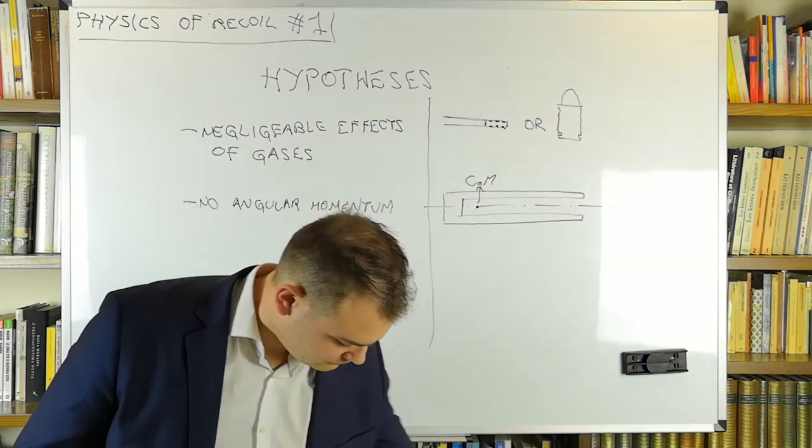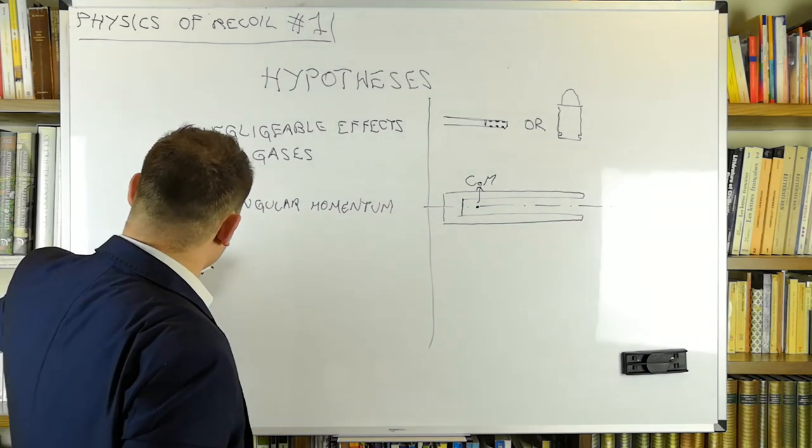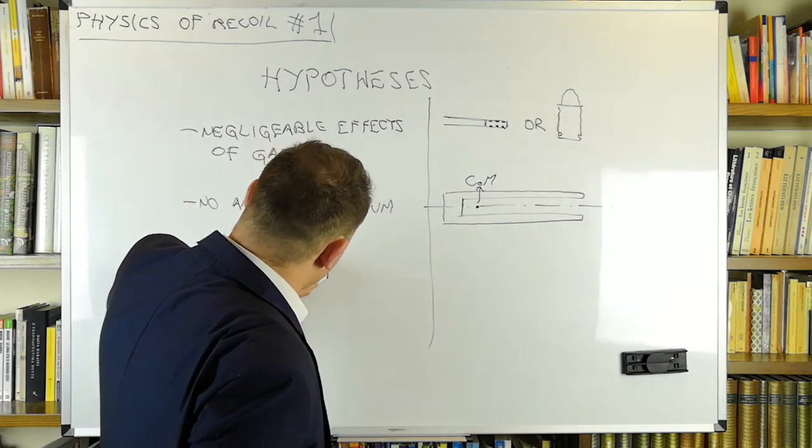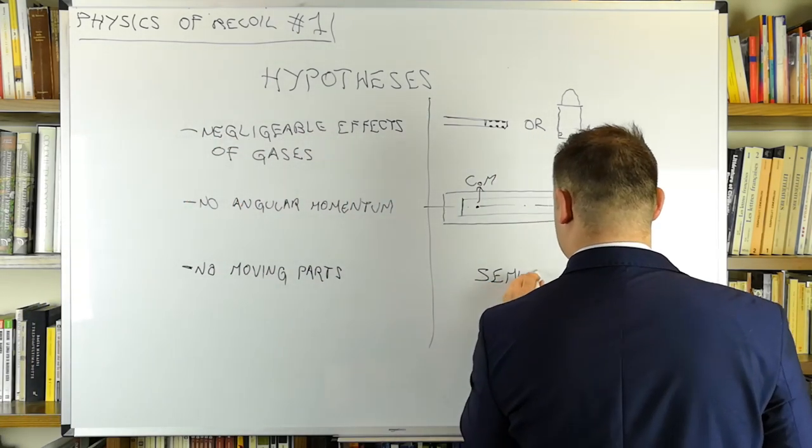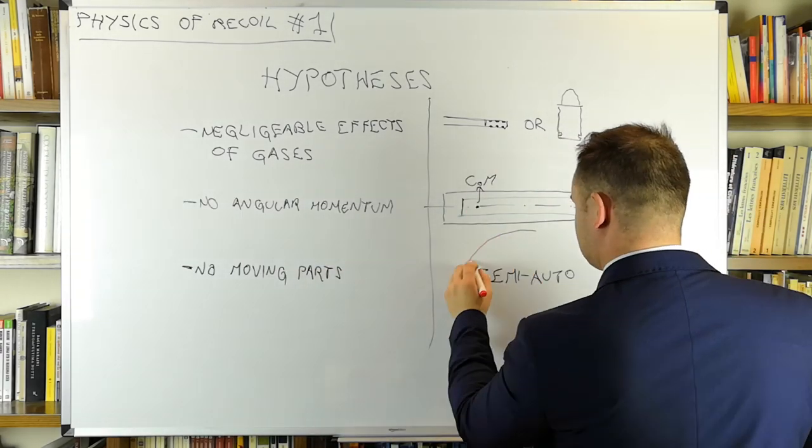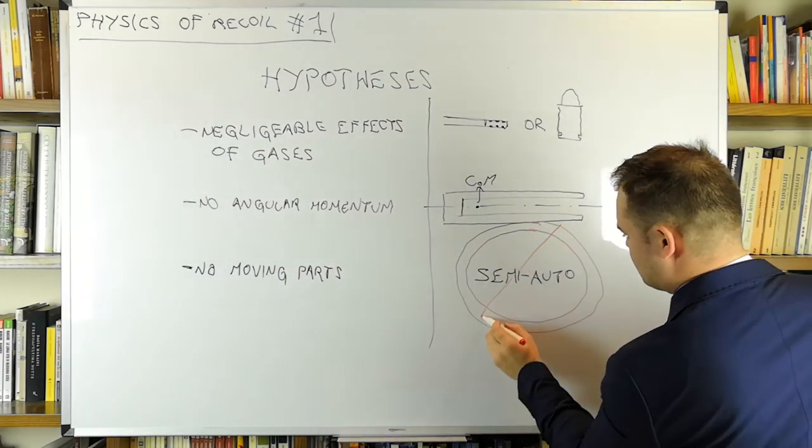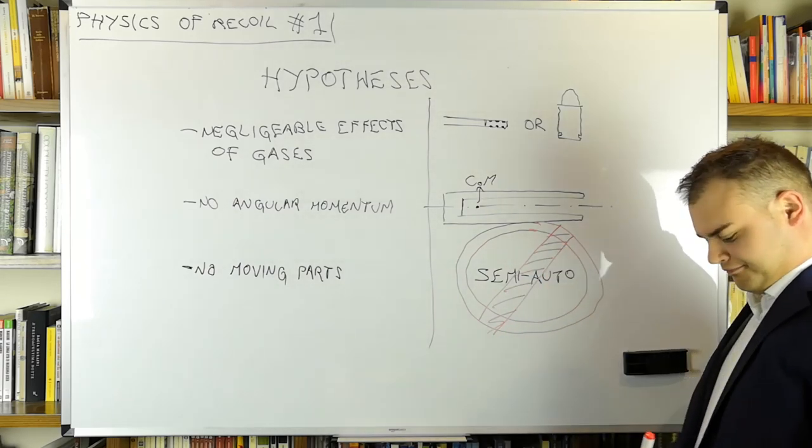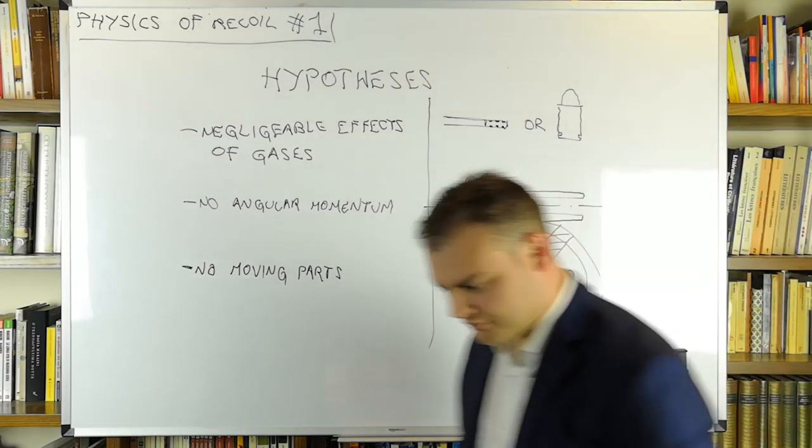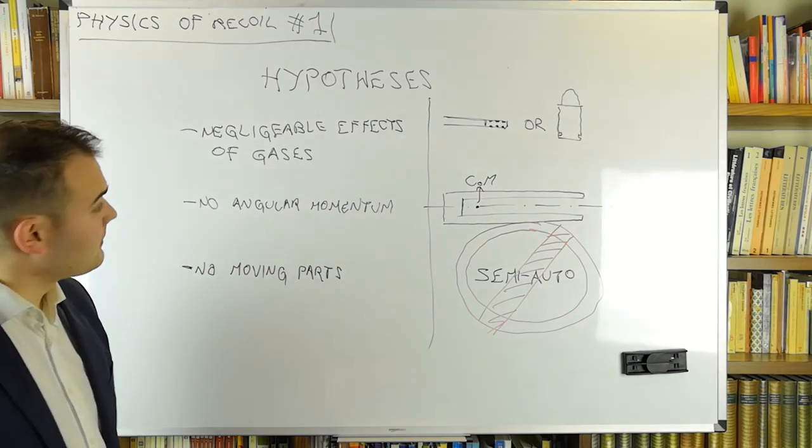If these hypotheses are respected, the formula I'm going to give you will give exact results. But even if they are not, you can still use it and get accurate results, you will just be ignoring a few other phenomena, and in order, the recoil due to the gases, inertia, the barrel rise, and the difference between energy of recoil and felt recoil.